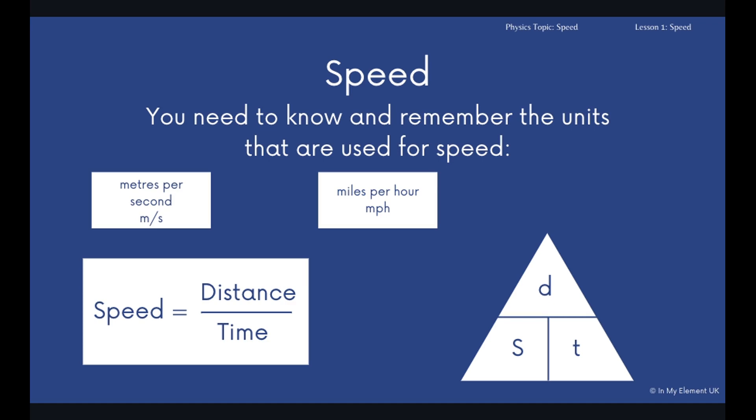Sometimes you might have to convert between hours, minutes, and seconds so that you're either measuring in seconds or in hours. The other one there is kilometers per hour. That means that the distance must be recorded in kilometers and the time must be recorded in hours. Now like I said, you need to be able to use this formula triangle.